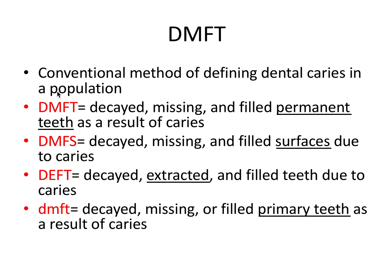So we have a couple of modifications on the original. If we use an E instead of an M, that means the tooth is indicated for extraction, or it has been extracted as a consequence of caries. Using S for surface instead of tooth is a more precise measurement, because we're considering each and every surface instead of just the whole tooth. And using lowercase letters means we're talking about primary teeth. Once a tooth becomes decayed, missing, filled, or extracted, that damage and treatment becomes irreversible — hence why this measure is an irreversible measurement.